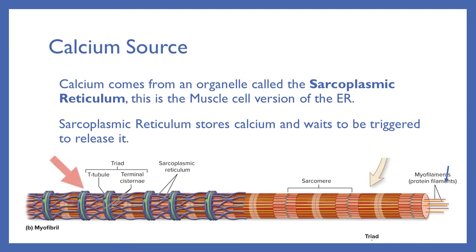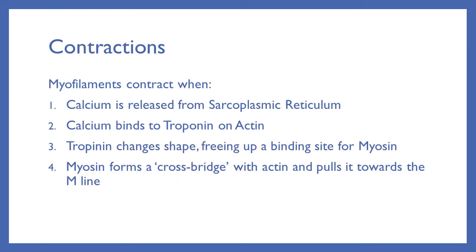There's also a structure called the T-tubule. A contraction will take several steps: myofilaments will contract when calcium is released from the sarcoplasmic reticulum. It binds to the troponin on actin, troponin changes shape, freeing up a binding site for the myosin, and the myosin forms a crossbridge with actin and pulls it towards the M-line.